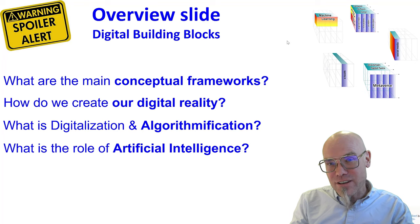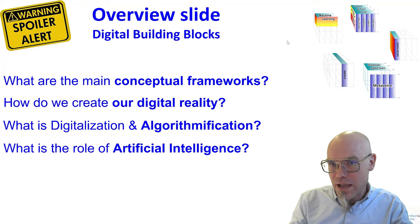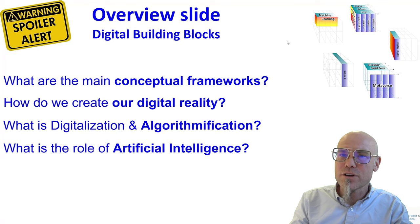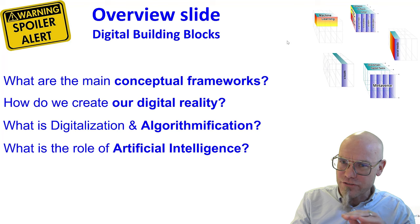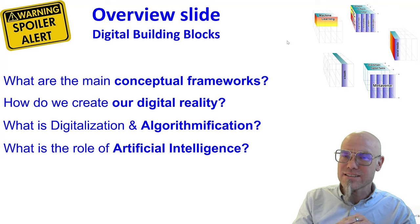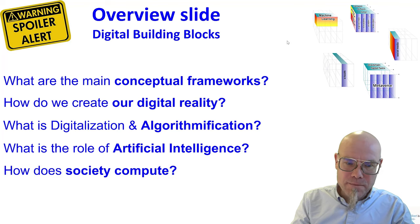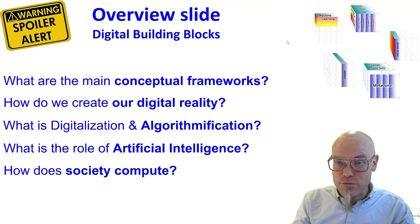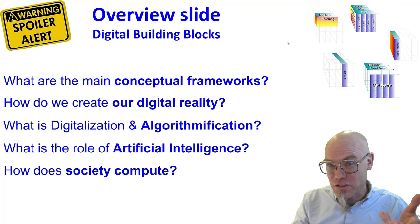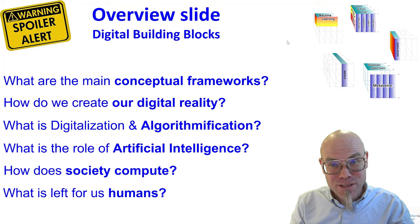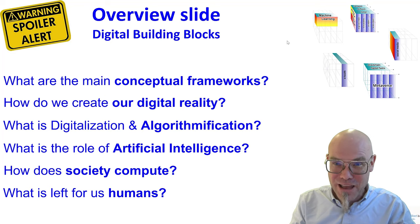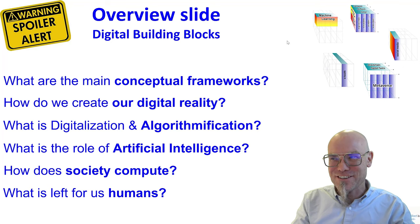We have to talk about how algorithmification is built on the back of artificial intelligence. We will spend a lot of time in this lecture breaking down the different kinds of artificial intelligences and how we are using them. Then we can see how society computes this co-computation together with its knowledge-producing algorithms, and finally what is left for us humans — what happens with biological intelligence after all of that.